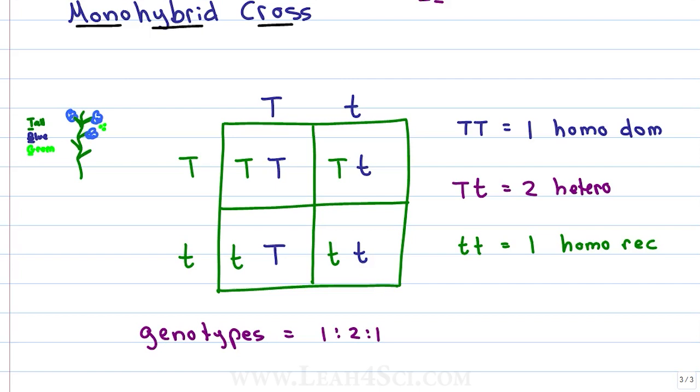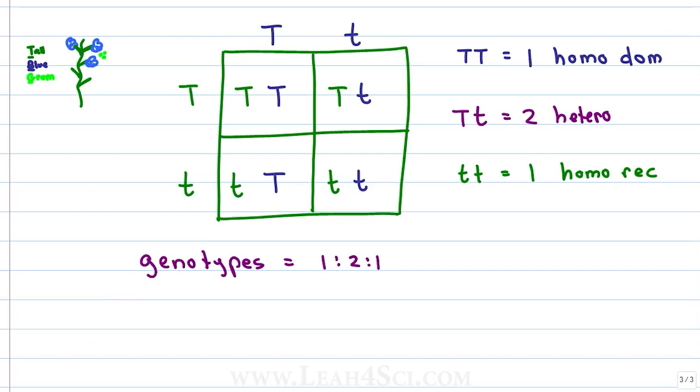Genotypes can only be identified through testing, either through monohybrid crossbreeding or through a genetic evaluation. What we can see with the eye is the phenotype, and these are the ratios that you absolutely have to memorize. The phenotypes, regardless of being dominant or recessive, tells us that three out of four offspring are going to have a dominant trait. In this case, 75% of the offspring will be tall plants, and 25% of the offspring, meaning one out of four, is homozygous recessive, which we can see as a short plant.